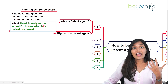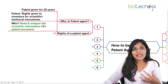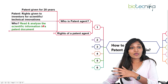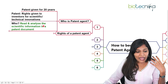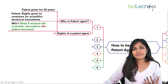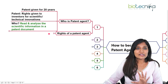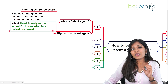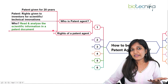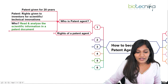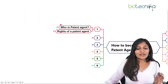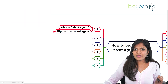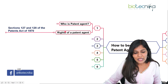Suppose a person has discovered a drug for a particular disease — the patent agent will analyze what this drug has done in treating the disease compared to other drugs. They analyze the scientific information in the form of a patent document. Without the approval of this person, a patent cannot be done in India or throughout the world.